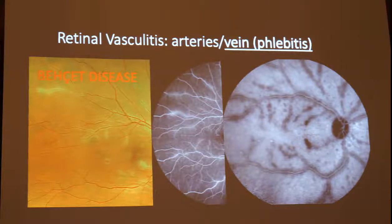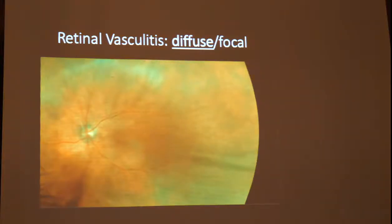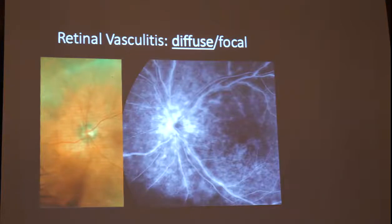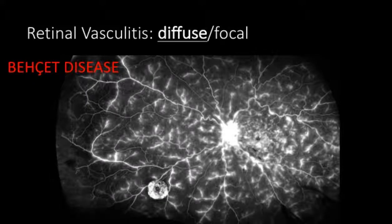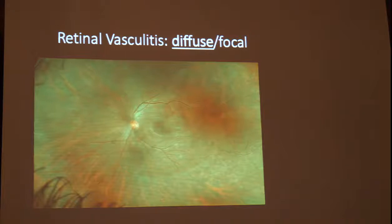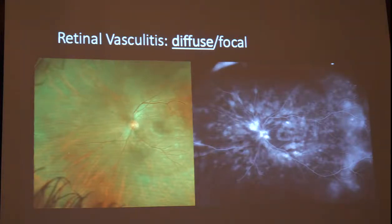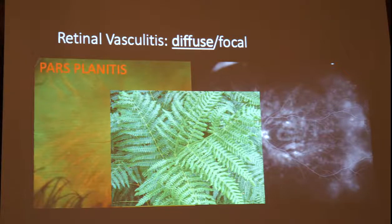The second question you may ask yourself when you see a patient with vasculitis is whether it is a diffuse vasculitis or a focal vasculitis. Diffuse vasculitis can involve the main retinal vessels, as in this case of birdshot chorioretinopathy, or may involve both the main vessel and the small vessels in the periphery, as in Behcet disease. There are also cases of diffuse vasculitis that localize mainly in the far periphery, having a very peculiar fern-like pattern, as in pars planitis or other causes associated with intermediate uveitis.